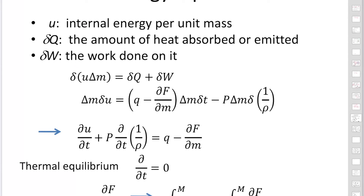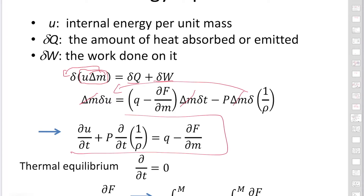The energy equation can now be expressed. The change of the internal energy per unit mass is U, the internal energy. To find the internal energy of a shell, multiply by delta M. The change of the internal energy is due to the change in heat absorbed by the shell, delta Q, plus the work done on the shell, delta W. Substituting delta Q and delta W, and since delta M is constant it can be moved outside and cancelled, giving the equation for the change of internal energy per unit mass.